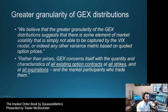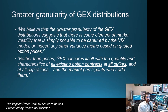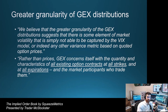To quote the paper: 'We believe that the greater granularity of the GECS distribution suggests that there is some element of market volatility that is simply not able to be captured by the VIX model or, indeed, any other variance metric based on quoted option prices. Rather than prices, GECS concerns itself with the quantity and characteristics of all existing option contracts at all strikes and at all expirations and the market participants who trade them.'